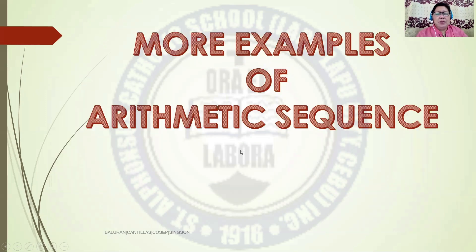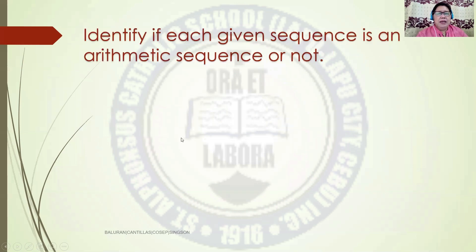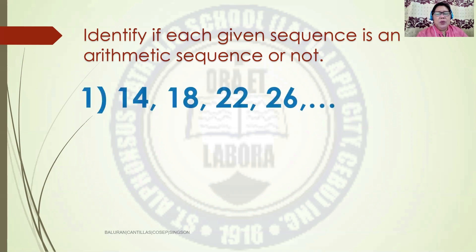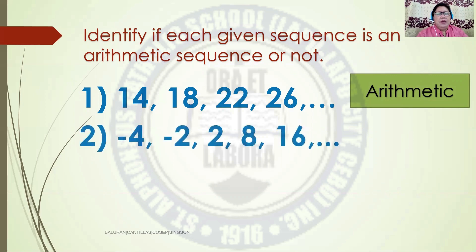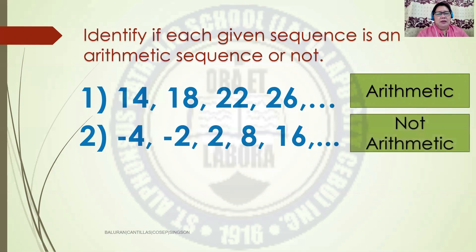Let us have more examples of arithmetic sequences. Identify each given sequence if it is an arithmetic sequence or not. Number 1: 14, 18, 22, and 26 — the answer is Arithmetic Sequence. Number 2: negative 4, negative 2, 2, 8, and 16 — the answer is Not an Arithmetic Sequence.